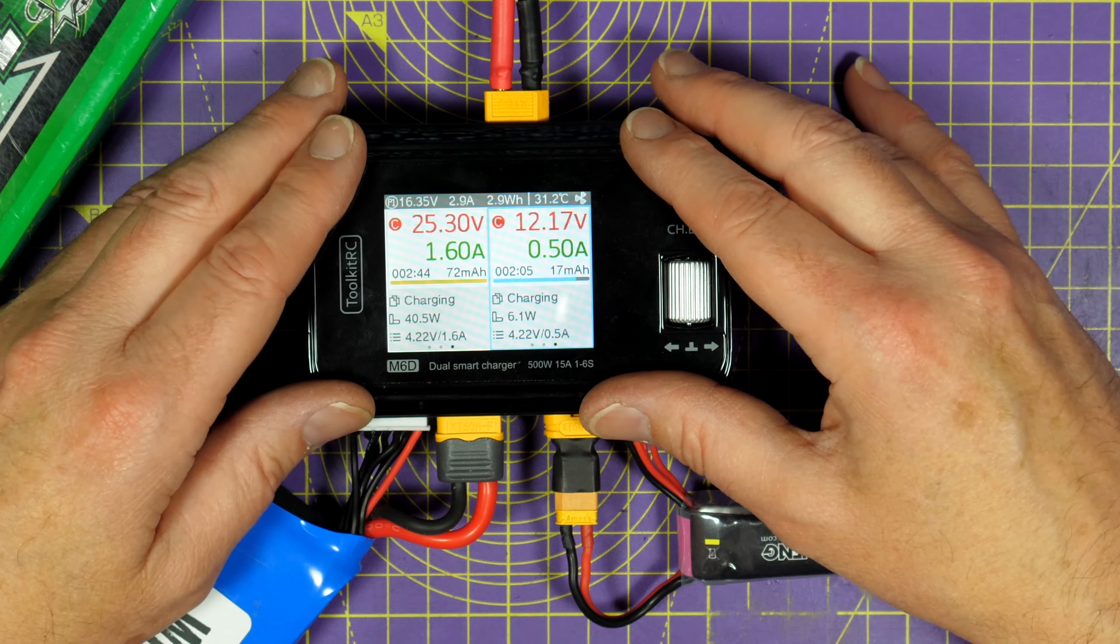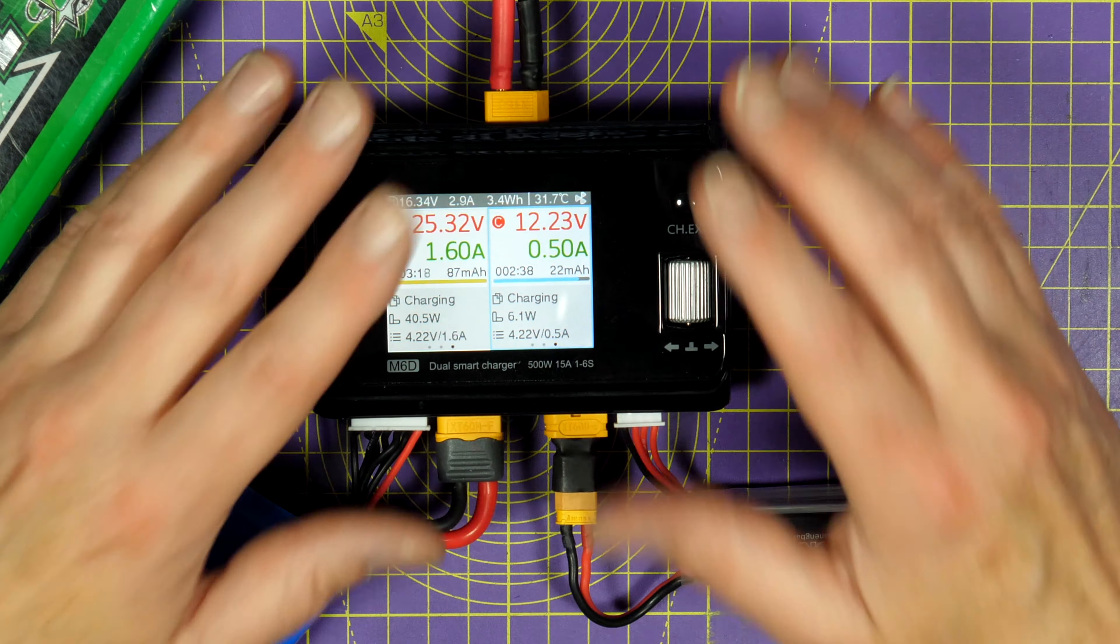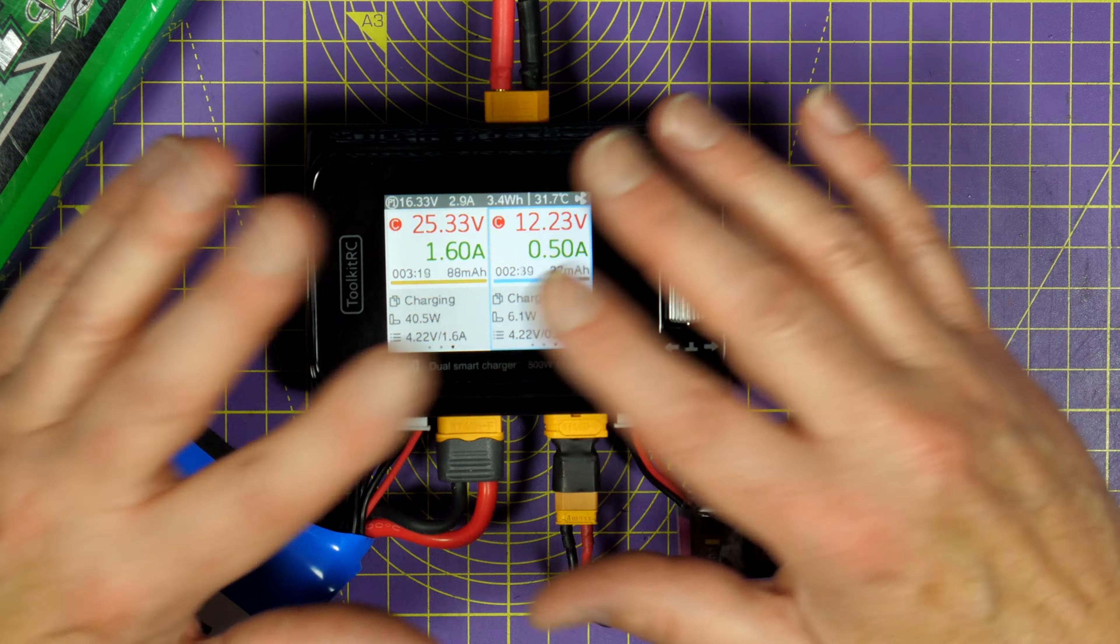And if I can get hold of a discount coupon, I'll add it in the description. I've been using this for a couple of weeks as my main charger. Even when I'd normally use my expensive iCharger Duo over here, I've been using this. You can just throw it in your flight bag and take it out with you in the field. And for me, this is the perfect product. Toolkit RC have nailed it again with this.